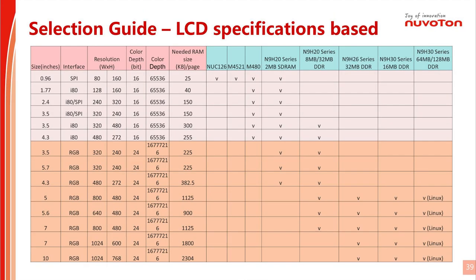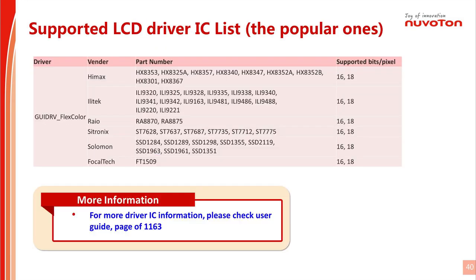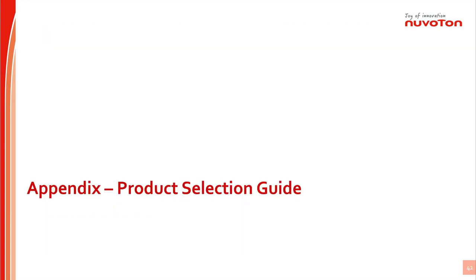This page introduces a selection guide for N9H series based on different system structures. The microcontrollers in the red rectangle are suitable for system structure 1 and 2 designs. The microcontrollers in the blue rectangle are suitable for system structure 3. Additionally, the supported LCD driver ICs are listed in a table, and engineers could check this list to know if their LCD driver IC is supported. The following contents are the appendix about the product selection guide for all HMI microcontroller solutions.